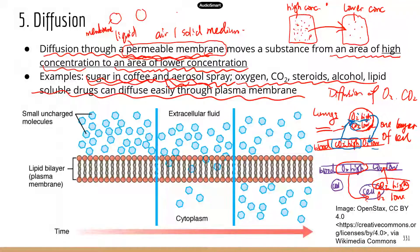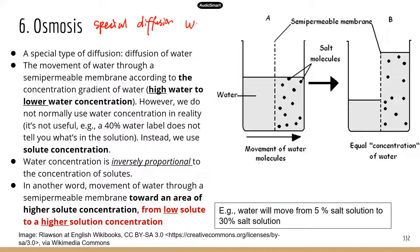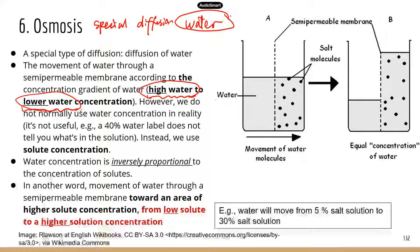Osmosis is a special type of diffusion. With diffusion, we had examples with sugar, oxygen, carbon dioxide, lipids, and alcohol — diffusion applies to pretty much all molecules. Osmosis is only about the movement of water. The movement of water follows the principles of diffusion: if you have a semipermeable membrane separating two areas of solution, one with high water concentration and another with lower water concentration, water is going to move from high to low water concentration.